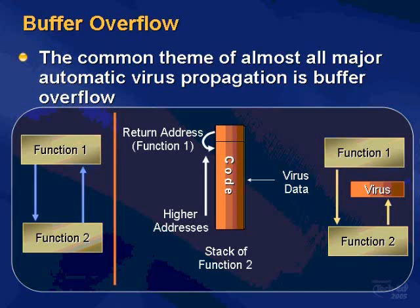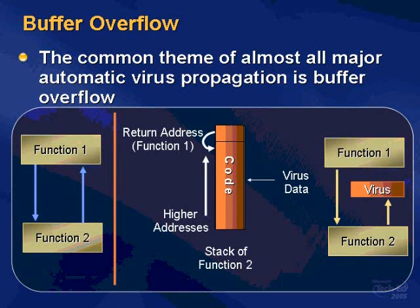If function two wants to allocate a buffer for private use, it allocates it also on the stack beneath the return address. If there's a programming error in function two where it accepts input from outside and stores it in the buffer, that data is stored from the bottom of the buffer up through the stack. A buffer overflow means data will be written over the return address. An attacker who finds this kind of problem can craft the input such that when function two tries to return to function one, it actually returns to code written into the buffer by the attacker — giving the attacker control of code flow.